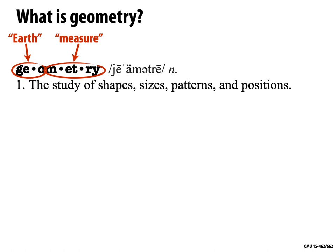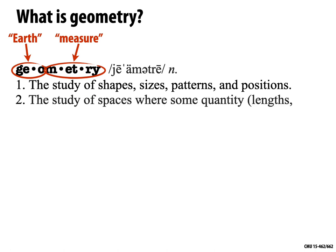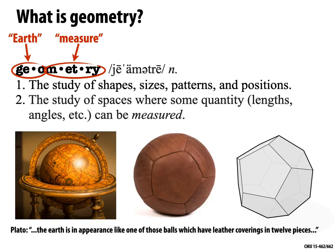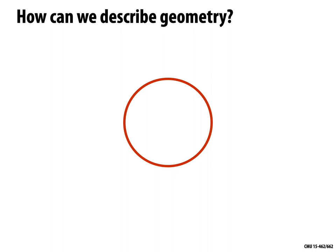Another definition: geometry is the study of spaces where some quantity like lengths or angles can be measured — and depending on which quantities you look at, that's the kind of geometry you're studying. Historically, people have been looking at geometry in terms of things that look like the polygon meshes we use in computer graphics. From the beginning, people had discrete models of geometry. Even Plato said the earth is like a ball with leather coverings in 12 pieces — essentially approximating the earth as a dodecahedron rather than a sphere.